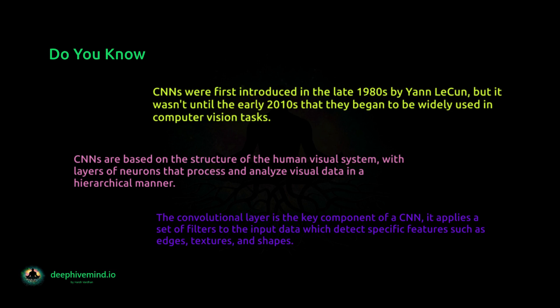The convolutional layer is the key component of a CNN. It applies a set of filters to the input data which detect specific features such as edges, textures, and shapes.